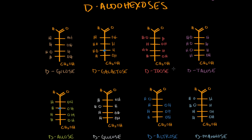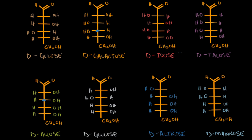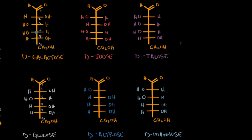All the L aldohexoses are diastereomers of each other, and you can carry that thought through to the ketopentoses — all the D ketopentoses would be diastereomers of each other, and each would have a partner in the L ketopentoses that would be their enantiomer. Now, glucose and galactose differ only at the C4 carbon. Because they differ at just one carbon, we have a special word for these: they're called epimers. Epimers are diastereomers that differ at one chiral center — a vocab word that will come up several more times in carbohydrate chemistry.